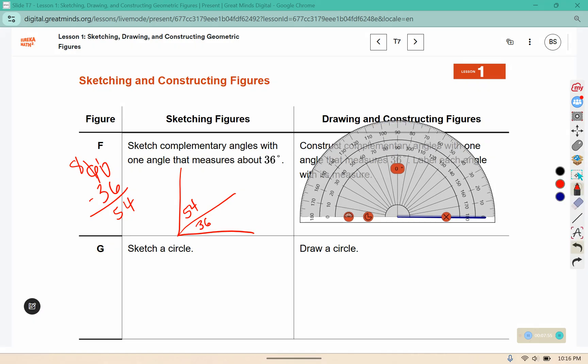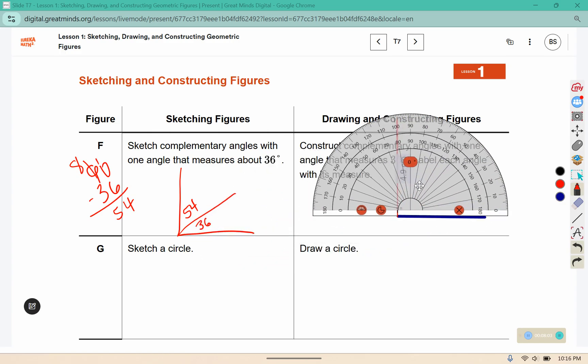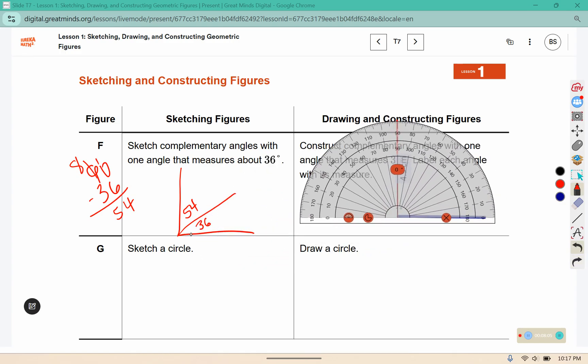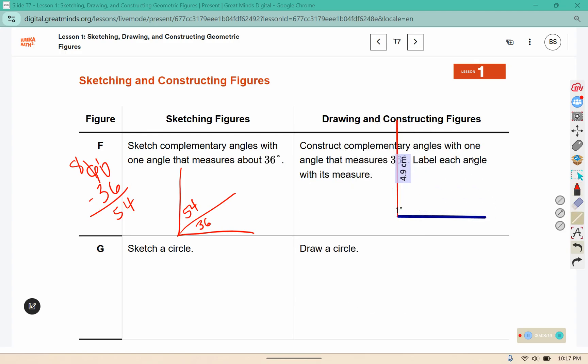We'll create a mark at 90, so we have a straight line going up there. And then we also need to create a mark at 36, and connect from there to here.